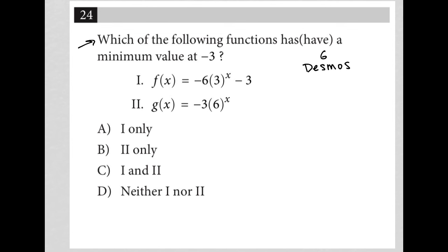So we're going to graph both of these in Desmos. And all you're looking for, minimum value just means the lowest value is negative 3. So the lowest possible f(x) value is negative 3.